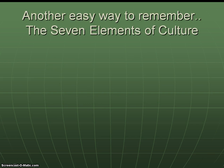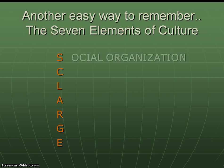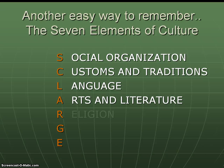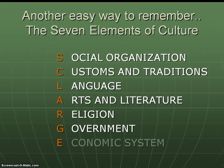There's an easy way to remember the seven elements of culture with the acronym SKLARGE. S is for social organization, C for customs and traditions, L for language, A for arts and literature, R for religion, G for government, and E for economics.